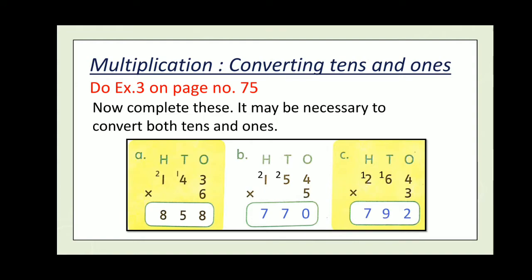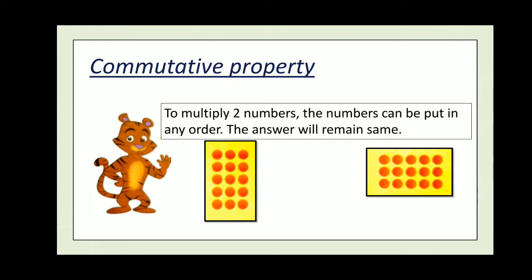So now we will learn about commutative property. Here you have to understand when multiplying 2 numbers, the numbers you can put in any order. And the answer will remain same. Whenever pattern you choose to multiply, the answer of 2 digits came out to be same.